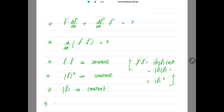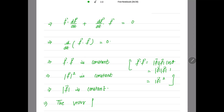Since |f|² is constant, this implies |f| is constant. Therefore, if f · (df/dt) = 0, then the vector function f has constant magnitude — which is the required sufficient condition. Hence the proof is complete.